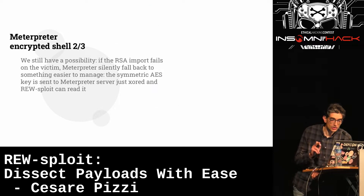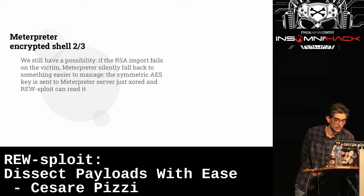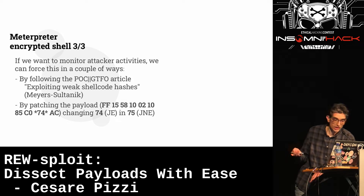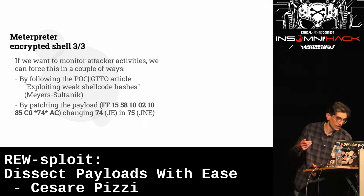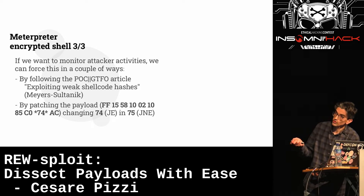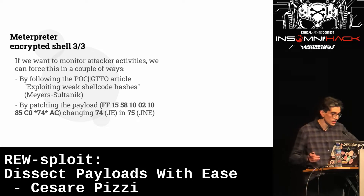However, there's still a possibility. When the attack starts, Metasploit tries to import an RSA public key on the victim to encrypt the symmetric key. If that import fails, it silently falls back to another encryption method — just an XOR key — and RE-sploit can read that. If you can engage your attacker and modify what he's doing on your system, you can force this fallback and then decrypt all communication between the two systems.